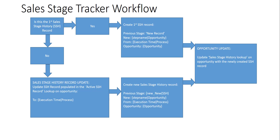When we move to the next stage, the workflow runs again and finds this is not the first sales stage history record, so we follow the 'no' path. The first thing we do is take the record in the sales stage history lookup field on the opportunity and set the 'to' field — the end date and time — to the execution time of that workflow. Then we create a new sales stage history record, setting the previous stage field of the new record to the new field from the current sales stage history record.